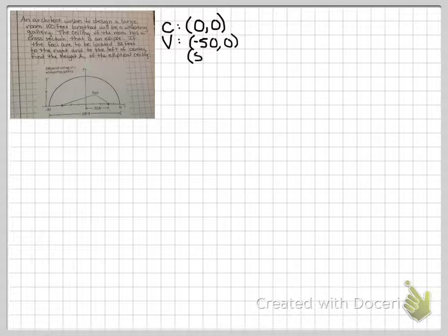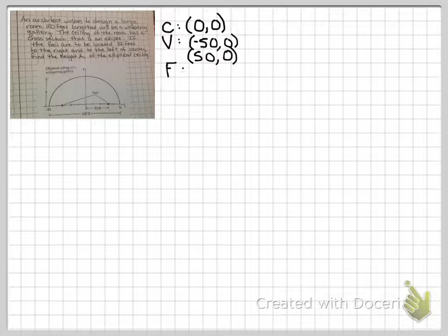The other wall, the other vertices, is at negative 50, 0. They also told us about the foci. Right there in the picture and in the word problem, they tell you that the foci are 32 feet left and right. So negative 32, since the center is 0, 0, left and positive 32, 0, right.